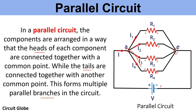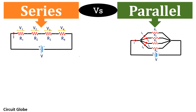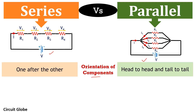Now let us discuss the differences between series and parallel circuits. The first parameter is orientation of components. In a series circuit, the components are arranged one after the other. While in a parallel circuit, the components are arranged in a head-to-head and tail-to-tail manner, meaning heads of all components are connected to one common point and tails of all components are connected to another common point, with separate common points for heads and tails.